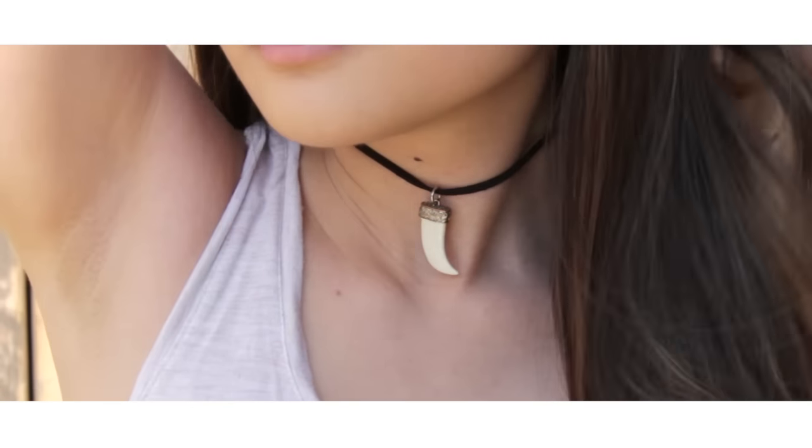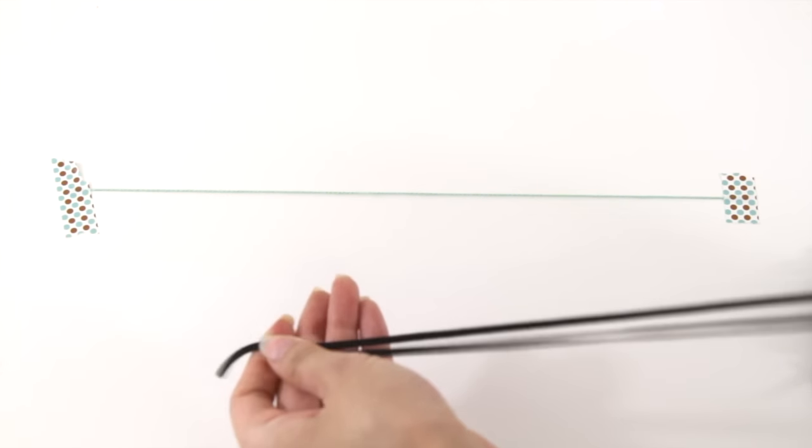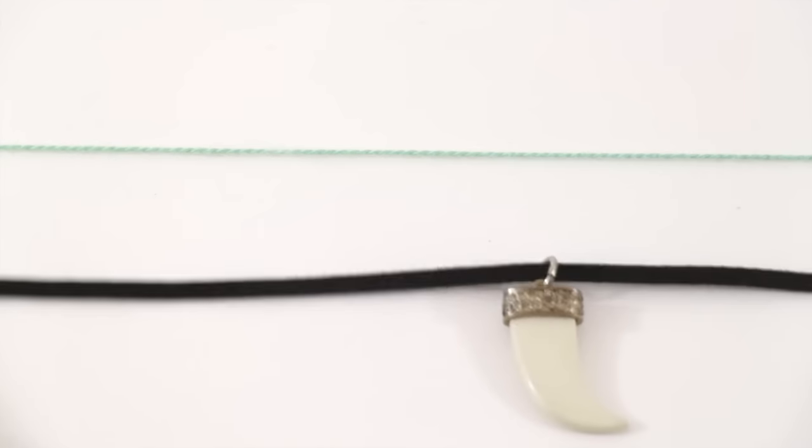This next choker is stupidly easy to make. I just wanted to make it myself so that I could adjust the tightness to whatever I wanted. All you really need is leather cord that's twice the length of your neck, and a charm that you literally just throw through when you're done.